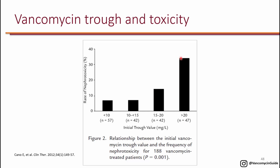Because the risk is greatest above 20, you should never have a trough greater than 20 unless the patient is on continuous infusion. These troughs are only pertinent to intermittent dosing and don't apply to continuous infusion. Even 15 to 20 is still more nephrotoxic than 10 to 15, so there is more reason to avoid targeting 15 to 20.